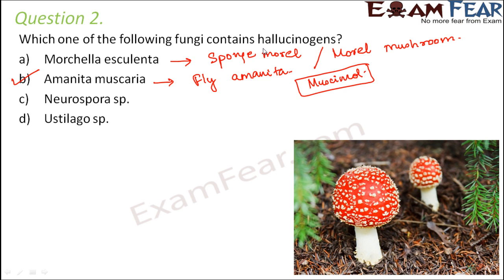The third option, Neurospora species, comes under the genus Ascomycetes and resembles nerve cells — that is, neurons. They are easy to culture, reproduce fast, and are often used as model organisms in genetics. Ustilago are smut fungi, generally parasitic on grasses, and are also used as a traditional food in Mexico. Our correct option is option B: Amanita muscaria.